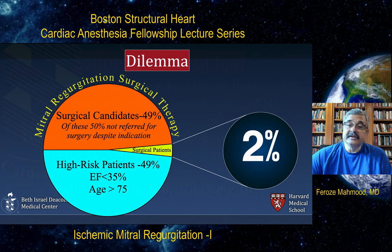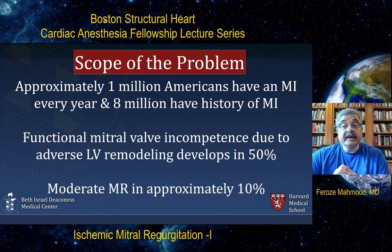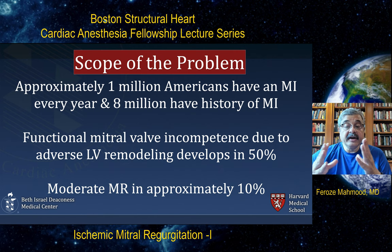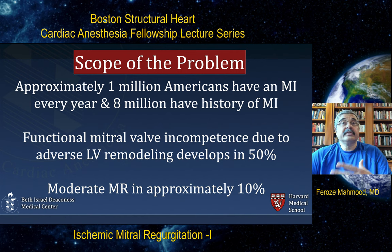Approximately 1 million Americans have a myocardial infarction every year and 8 million have a history of MI. Functional mitral valve incompetence due to adverse remodeling develops in 50% of patients who have myocardial infarction. Moderate MR eventually sets in about 10% of these patients. So this is a significant epidemiologic problem — it is not something trivial that we encounter in the operating room once in a while; it happens more often than we think.